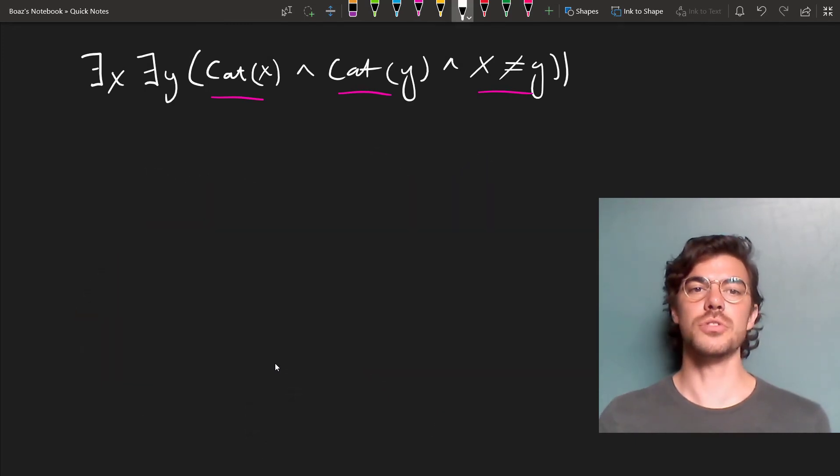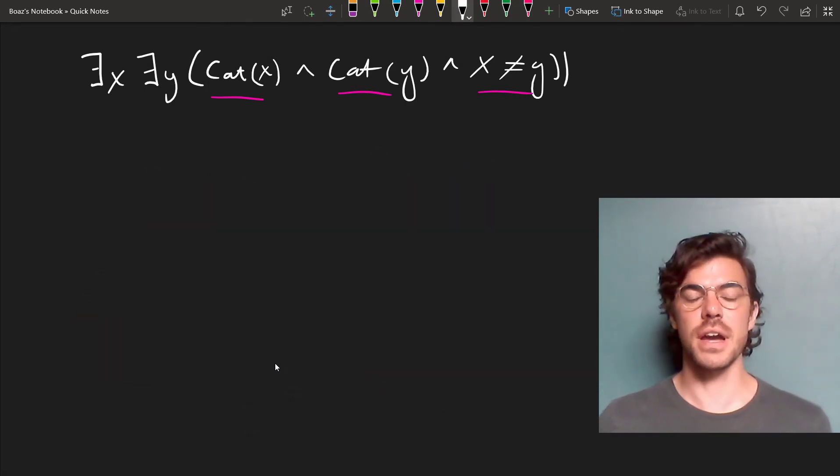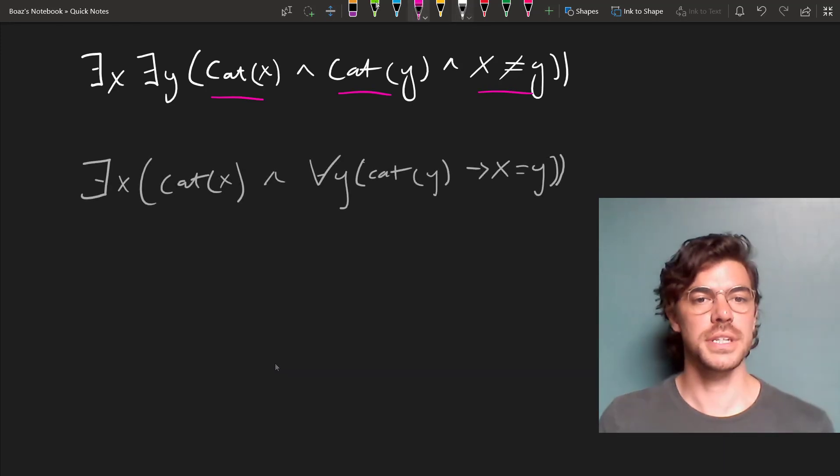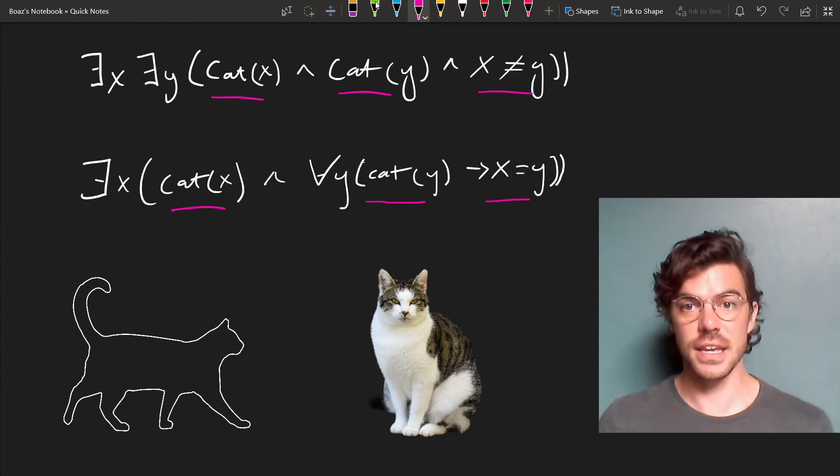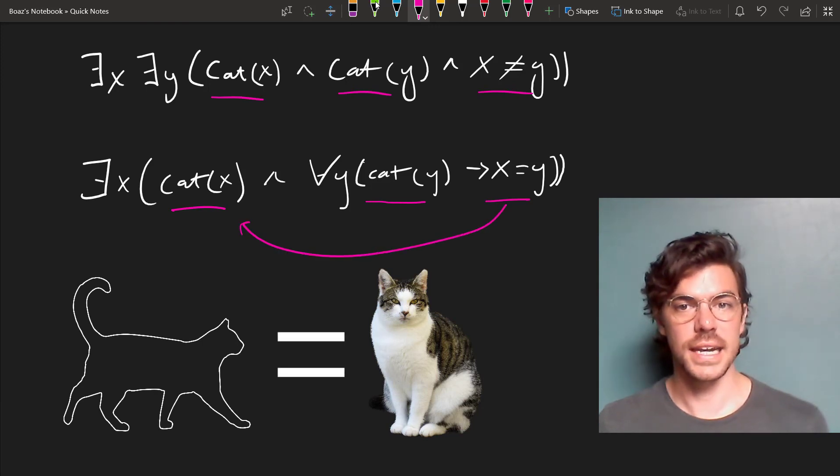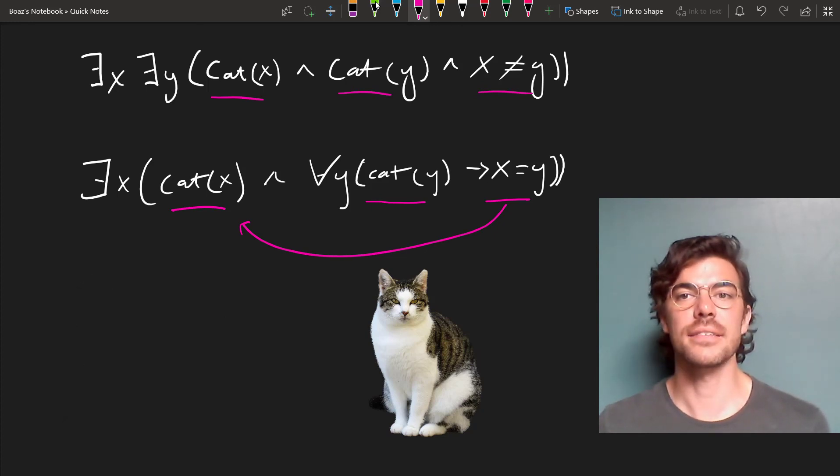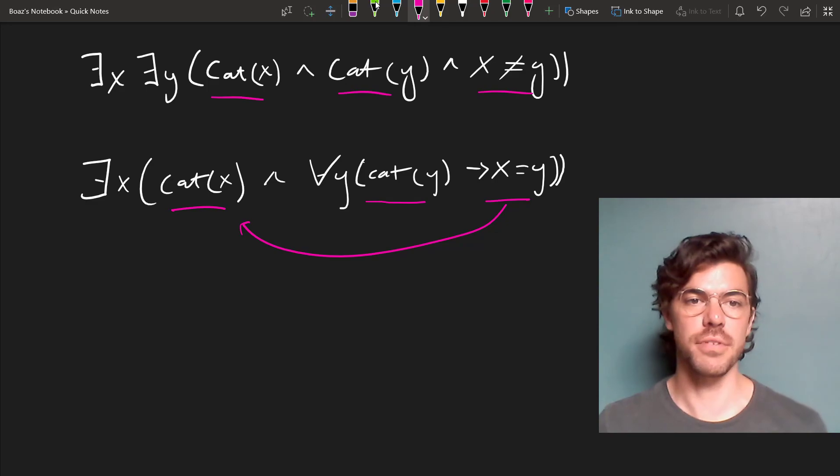But we can also, using multiple quantifiers, flip this around and say that there's only one. So we say that something is a cat, and for everything that is a cat, it is the same as that one original something that's a cat. And this will only be true in a case in which there's just one cat. So that's another thing that we can use these mixed quantifiers to do.